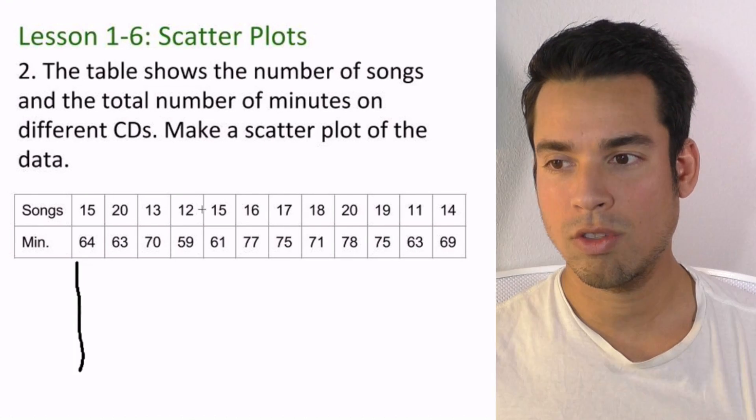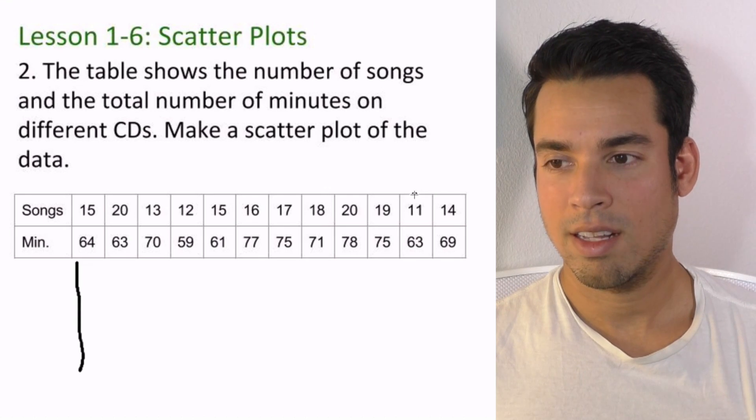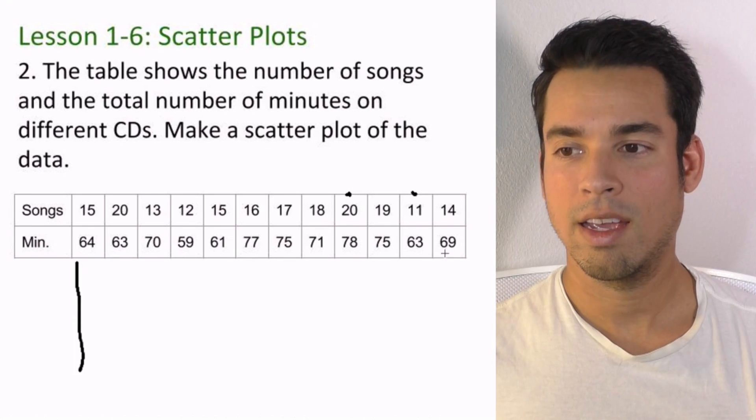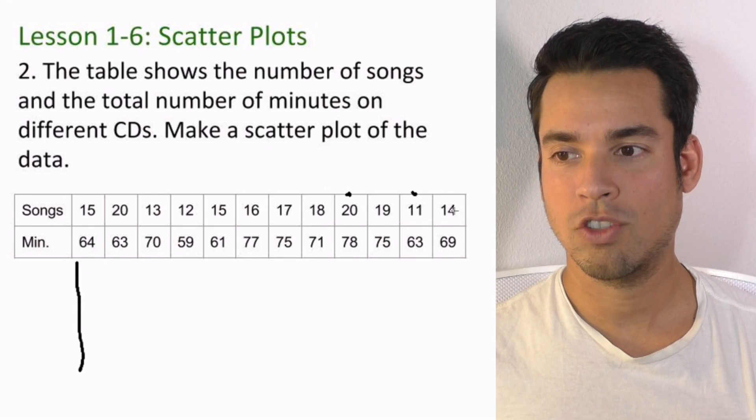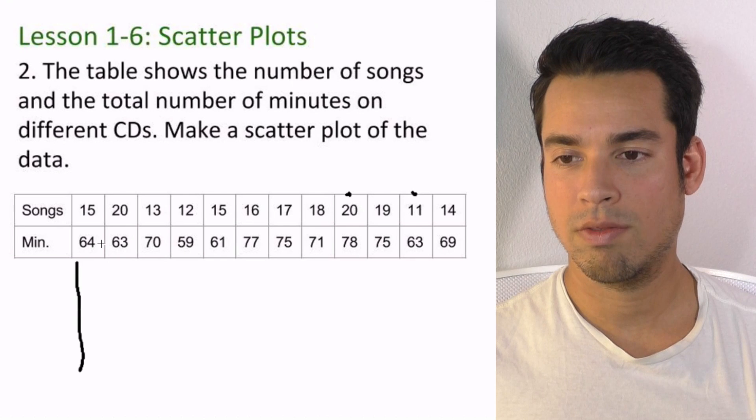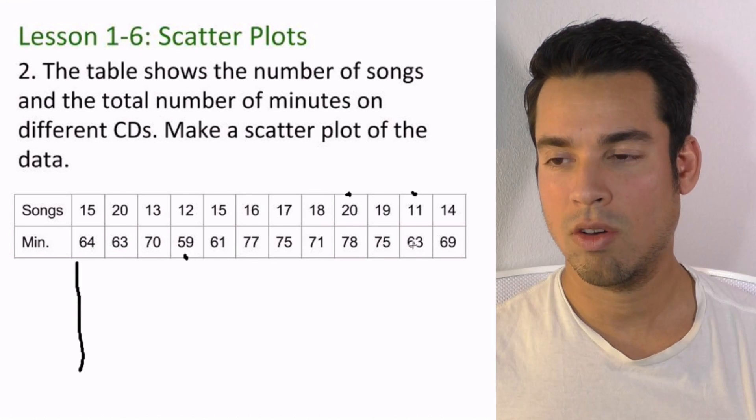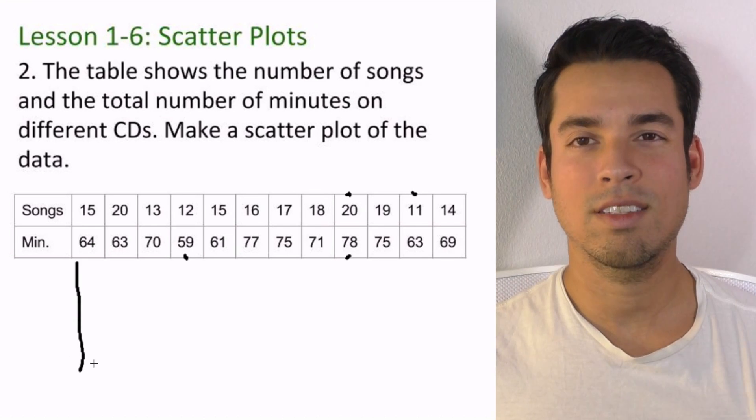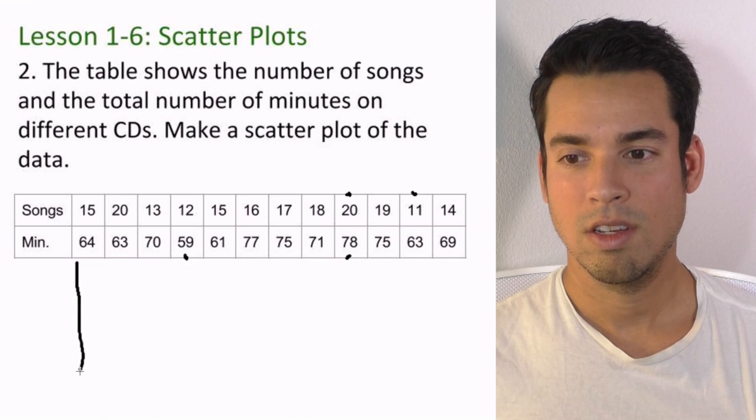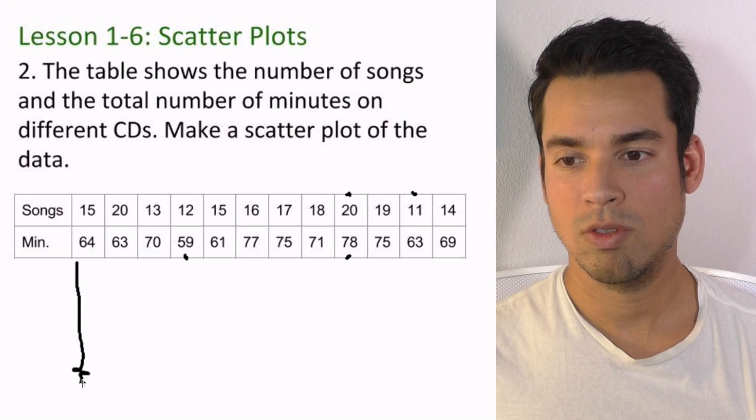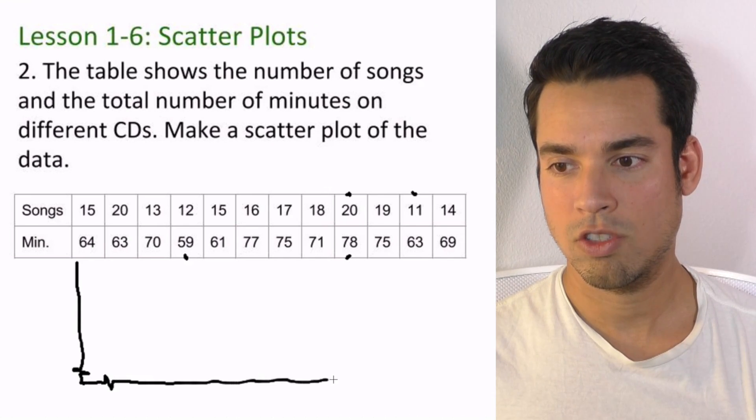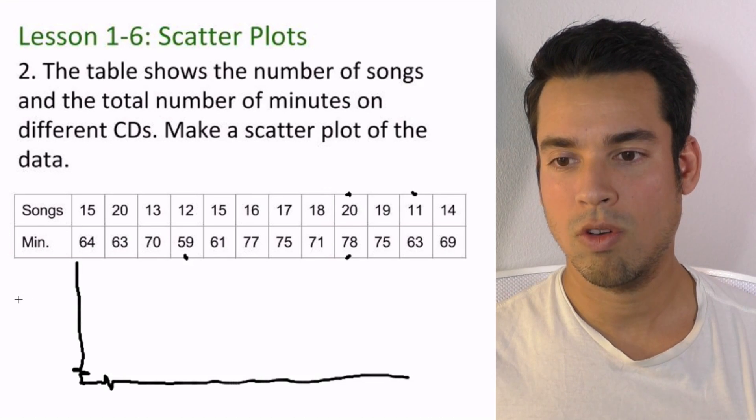Now you notice something interesting - the songs and the minutes don't start at zero. Songs, the lowest we have here is 11 and the largest is 20. That's our range from 11 to 20. Our domain is going from 59 all the way up to 78. So we're not going to start at zero because it doesn't make sense. So we do a little squiggly line like this - this indicates that we're jumping. Let me do the same thing for the y-axis.